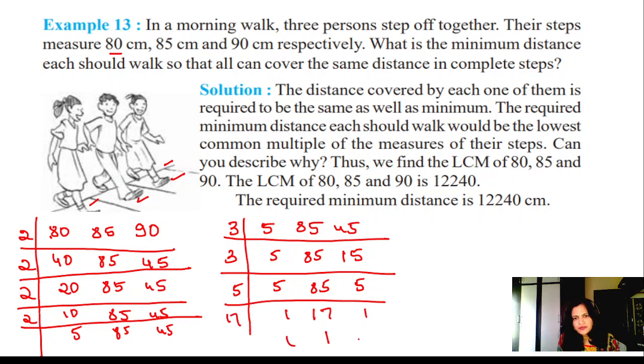All values became 1 now except 17. Now we have to multiply to find the LCM.